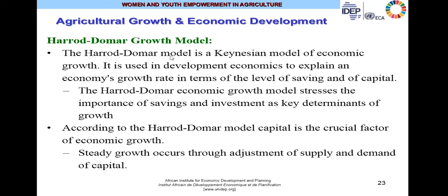The Harrod-Domar model is a Keynesian model of economic growth used in development economics to explain economic growth rate in terms of savings and capital. The Harrod-Domar economic growth model stresses the importance of savings — money that is kept in commercial banks — and investments as key determinants of growth. According to the Harrod-Domar model, capital is the crucial factor of economic growth. Surplus has to be generated, sent to the industrial sector, and income obtained and saved in the banks. An entrepreneur — in this case an agricultural entrepreneur — borrows the savings and invests back into the economy by investing in machines and capital, which generates and increases the production capacity in the country.